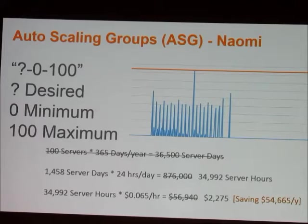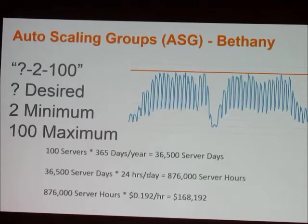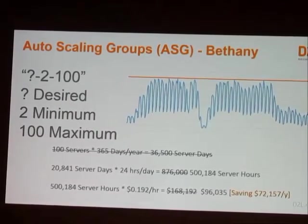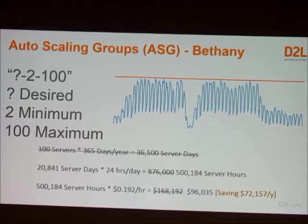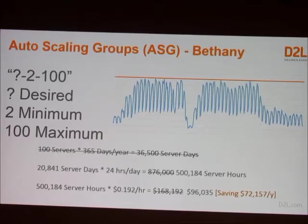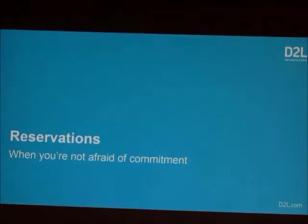Let's check in with Bethany and the online education case. We're still at C4 larges, still at $168,000. Things get better but not as massively different because we're not as spiky in load — we have significant use at most times. We still save about $72,000. We set the minimum at 2 because you don't want anything at 1 since then you're not redundant. But realistically we're not dropping below 10. So our actual minimum is 10. Can I get a better deal if I guarantee we'll always be above 10?